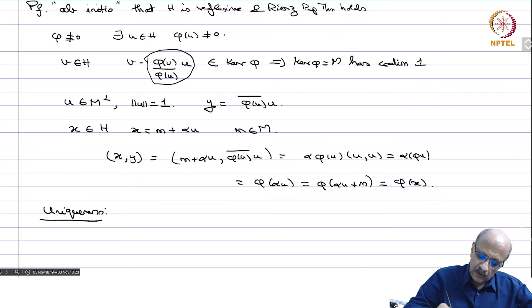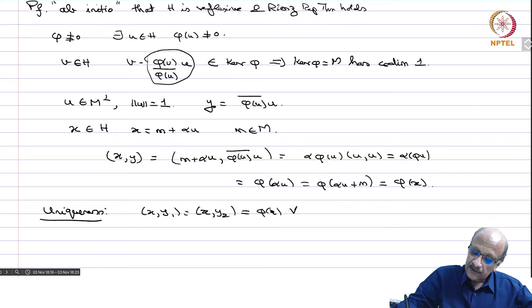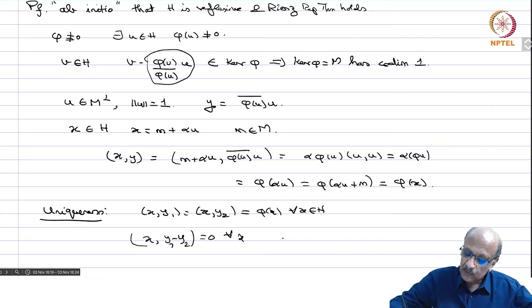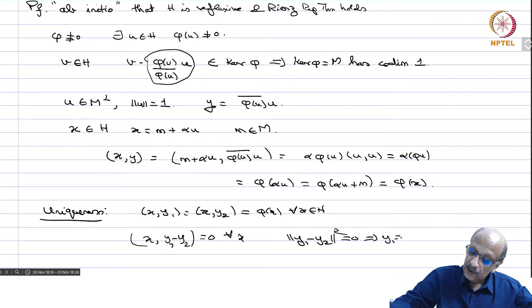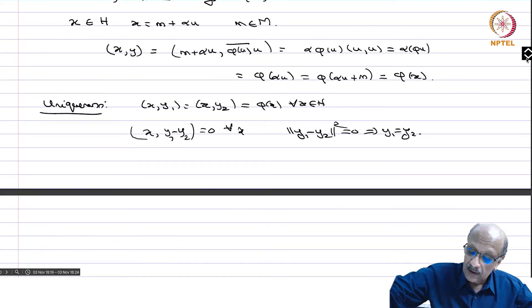For uniqueness: suppose inner product x,y1 = inner product x,y2 = phi(x) for all x in H. Then inner product x,(y1 - y2) = 0 for all x. Put x = y1 - y2; you get norm(y1 - y2) squared = 0, which implies y1 = y2. So you always have a unique vector.